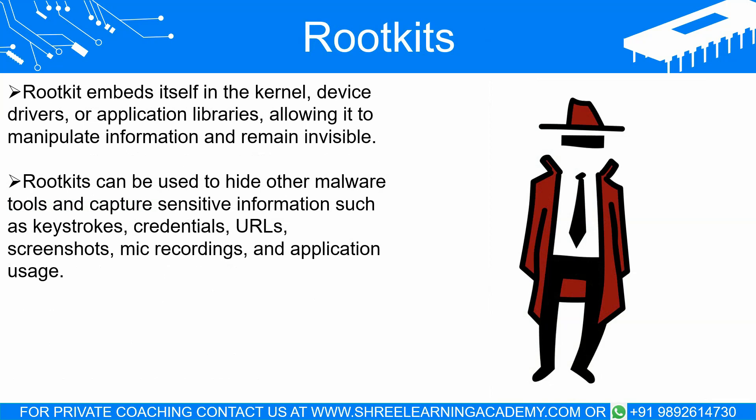That is why we can say that rootkit has the power of invisibility. We can also use rootkit to hide other malware tools. Rootkit or other malicious tools hidden by rootkit can capture keystrokes, sneak credentials, read URLs, capture screenshots, record mic, trace application use, or grant backdoor access to a remote hacker. When any system gets infected with rootkit, we cannot again trust that it is secure. There are some rootkits which have not yet been detected and removed, so we cannot fully trust any rootkit-infected system.